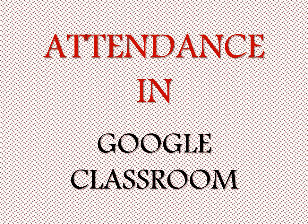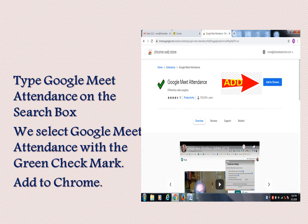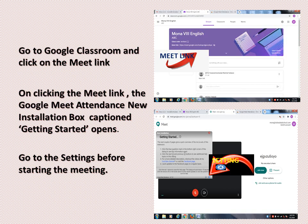Without further delay, let's get started. Click on Google Chrome on your desktop and type 'Google Meet Attendance' in the search box. Select 'Google Meet Attendance' with the green check mark, then press the 'Add to Chrome' button visible on the screen. The Google Meet Attendance extension will then be installed in your system.